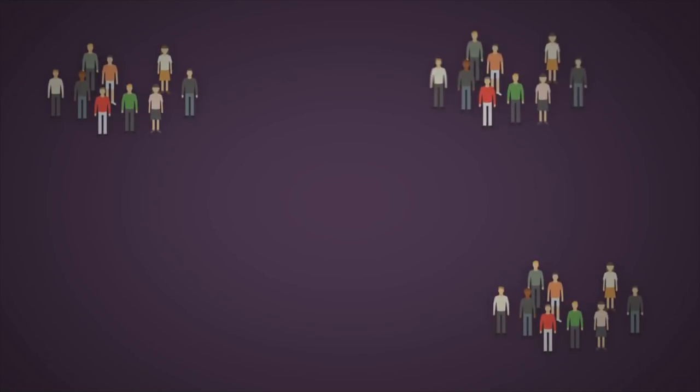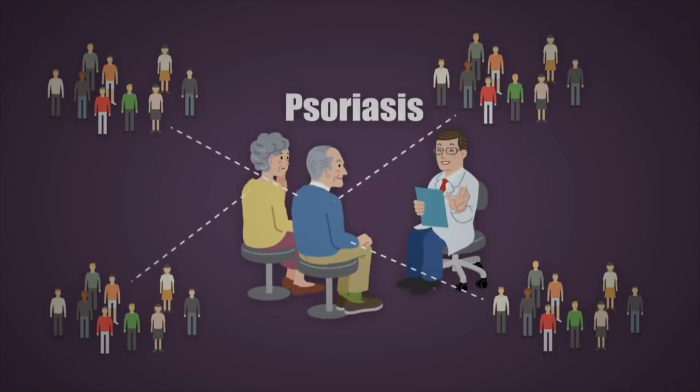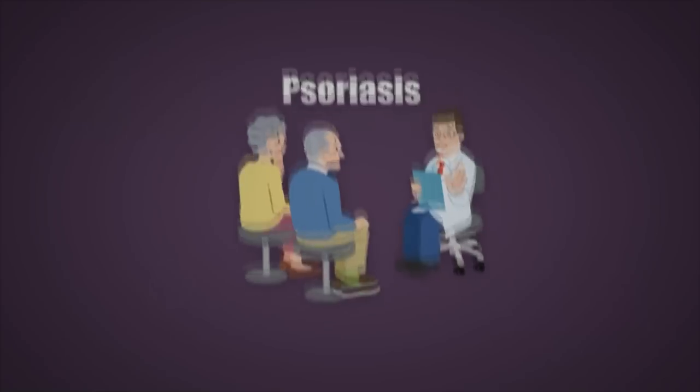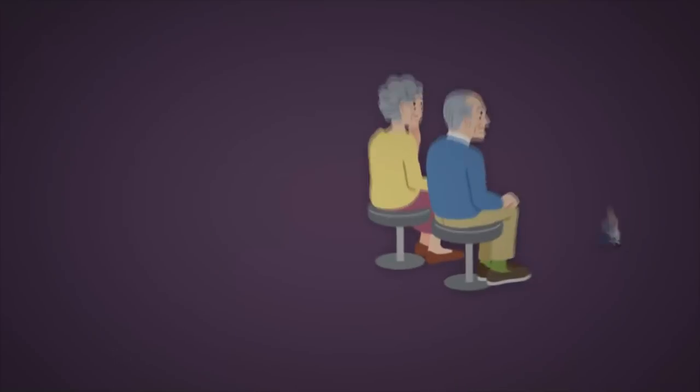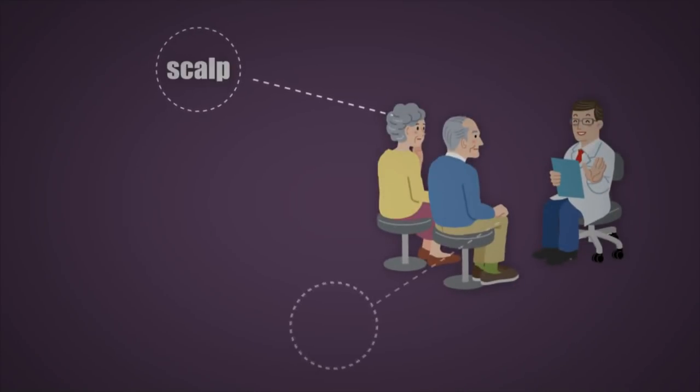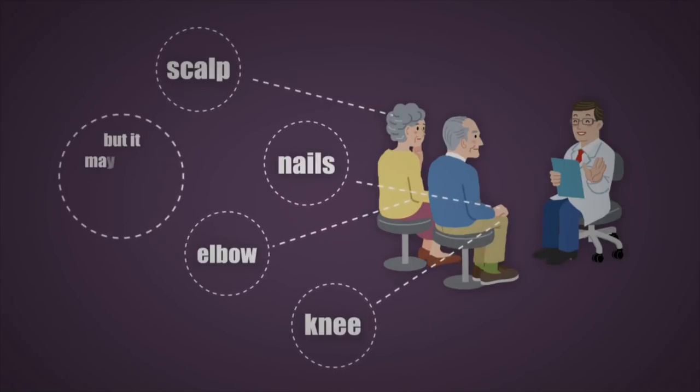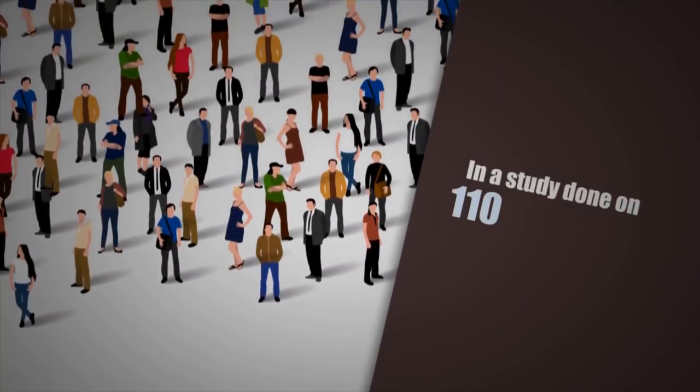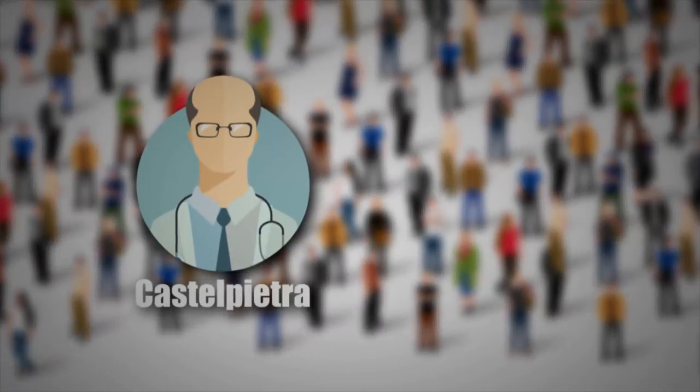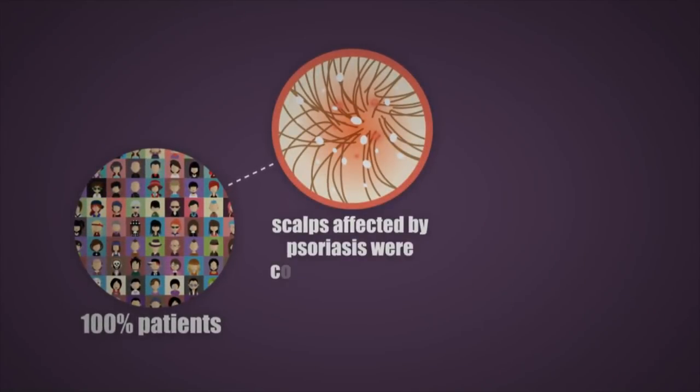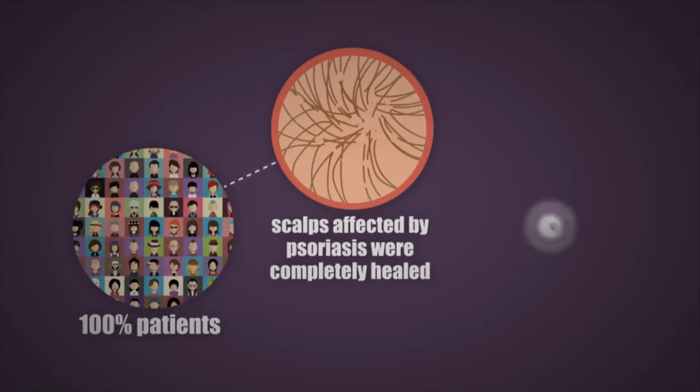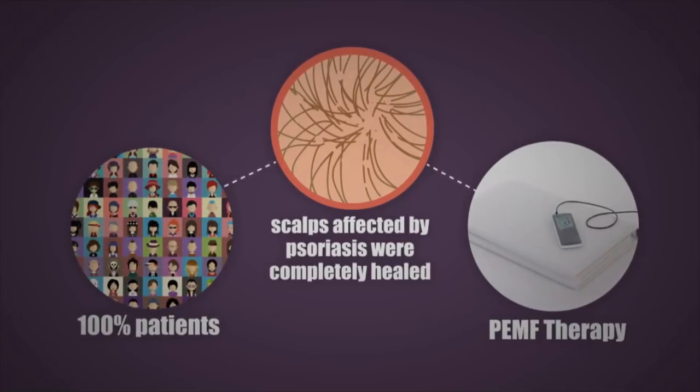Many people suffer from psoriasis, which results in skin problems like itching, peeling, and a scaly or inflamed skin surface. Psoriasis usually affects the scalp, knee, elbow, and nails, but it may occur on any area of the body. In a study done on 110 patients by Castle Pietra and D'Alconte, 100% of the patients who had scalps affected by psoriasis were completely healed as a result of being treated with PEMF therapy.